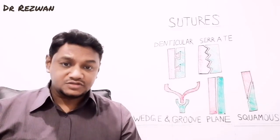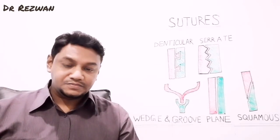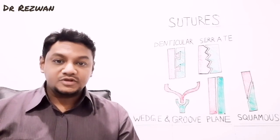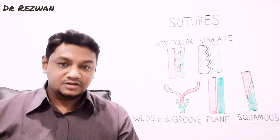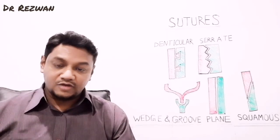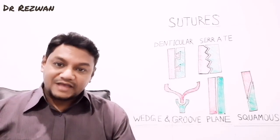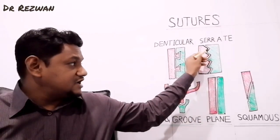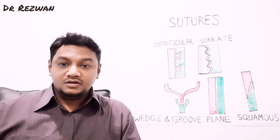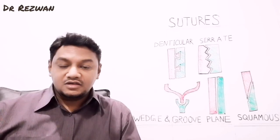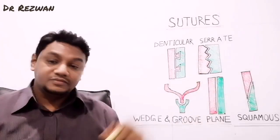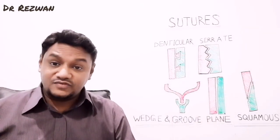There are different types of sutural joints, each unique in nature. The commonest type seen on the adult skull is the serrated type. In the serrated variety of sutural joint, the articular surfaces of the two bones have a saw-tooth-like surface, and one serration is articulating with another serration. This type of joint is called the serrated variety of sutural joint.